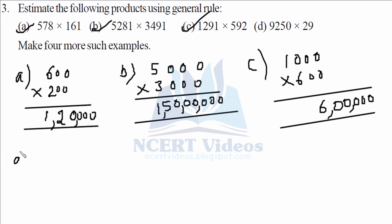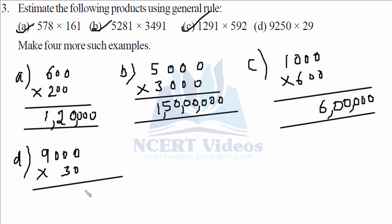For part D, applying the general rule: one number rounds to nine thousand and the other to thirty. Nine thousand into thirty gives four zeros, and nine into three is twenty-seven. So the answer is two lakh seventy thousand. That is the answer for question three, and that's how you do all the questions.